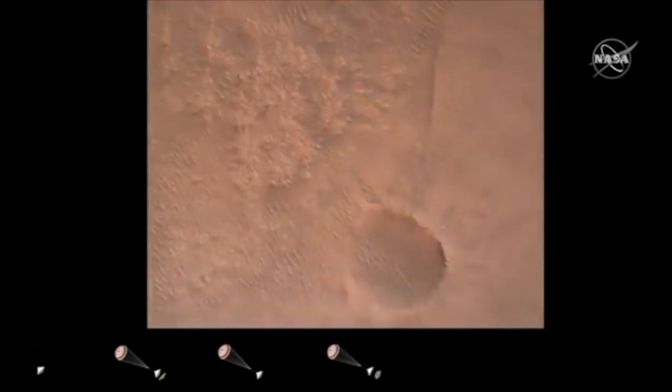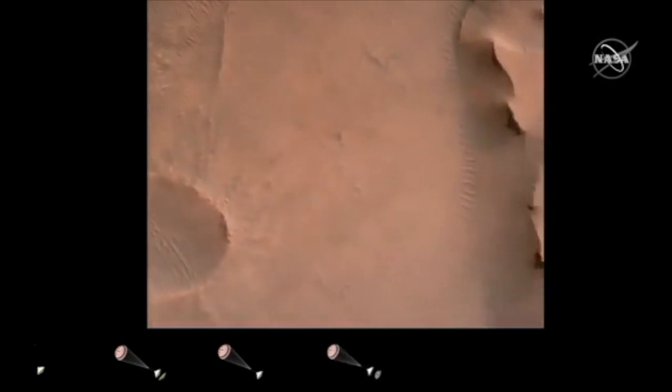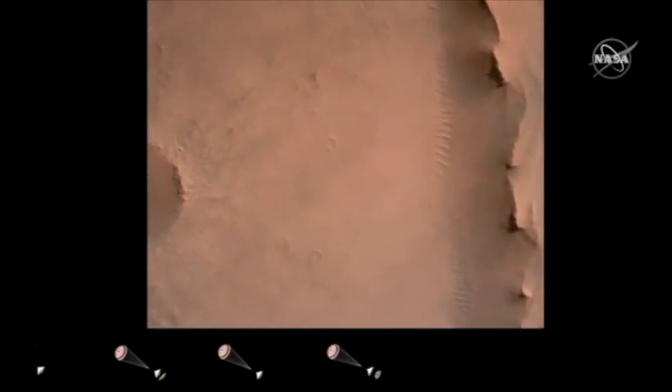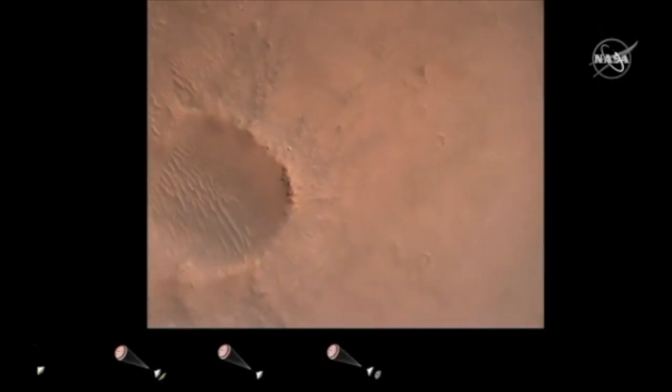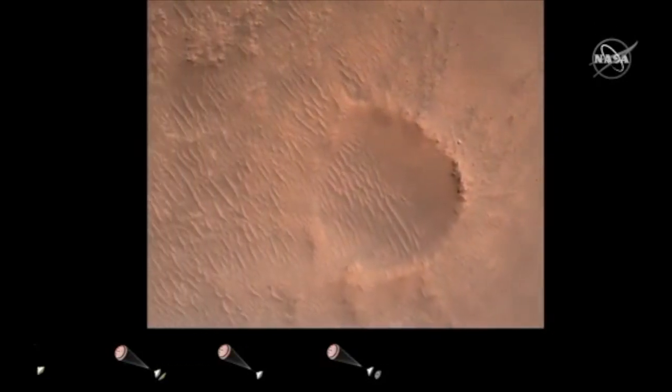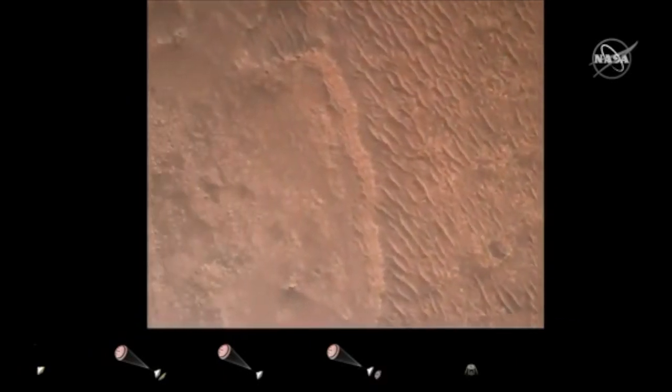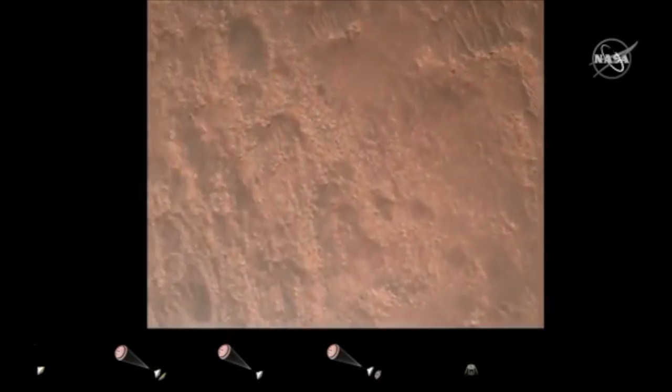Back shell set. Current velocity is 83 meters per second at about 2.6 kilometers from the surface of Mars. We have confirmation that the back shell has separated. We are currently performing the divert maneuver. Current velocity is about 75 meters per second at an altitude of about a kilometer off the surface of Mars.